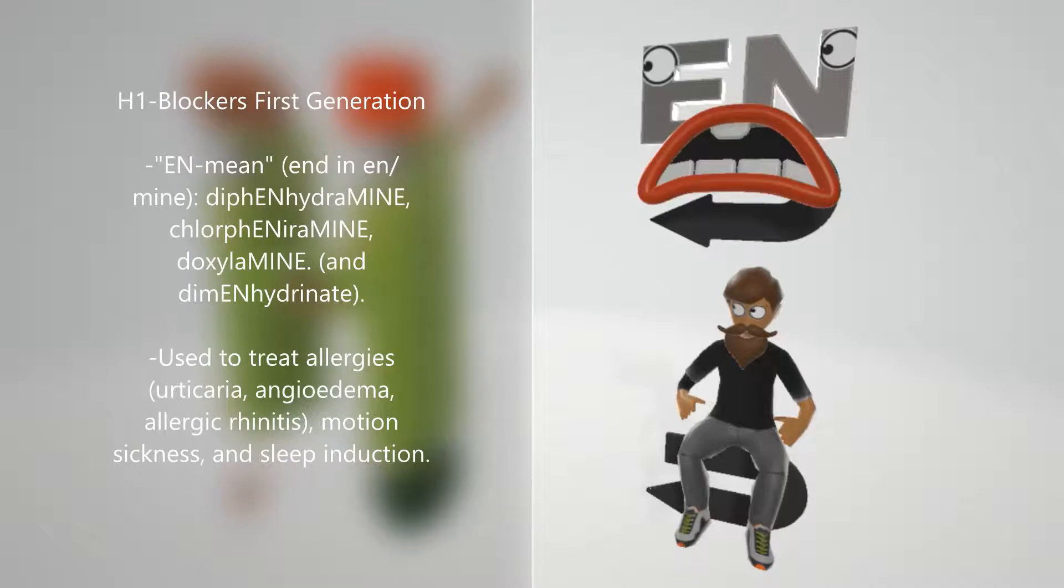What are these first generation H1 blockers used for? Well, they're used to treat allergies. As we mentioned, histamine receptors cause the symptoms in allergies. That's why the H1 blockers can treat the allergies. They can treat things like urticaria, angioedema, and allergic rhinitis.